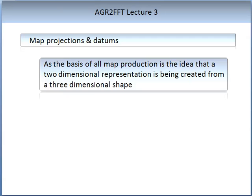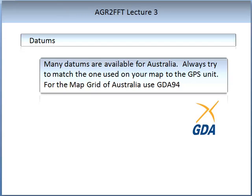We were first introduced to datums in Lecture 2 in the GPS lecture. A datum is a model of the Earth used in mapping. The datum consists of a series of numbers that define the shape and size. A datum is chosen to give the best possible fit to the true shape of the Earth. There are a number of datums in use, as the basis of all map projection — the idea that a two-dimensional representation is created from a three-dimensional shape. For the map grid of Australia, always use GDA94.